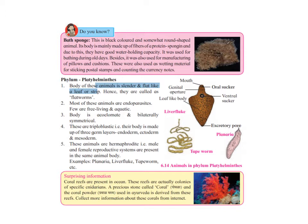As we look at the classification, animals are slowly evolving. In Porifera there were just holes, in Hydra they started having tentacles and a mouth, and now they are evolving further — their body is becoming symmetrical, they become triploblastic, made up of three germ layers, and they started showing reproductive organs. These animals are hermaphrodite, meaning both male and female reproductive systems are present in the same body.